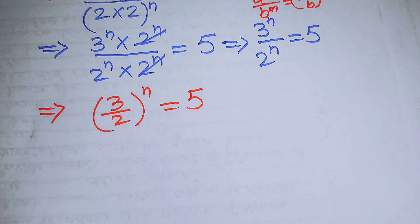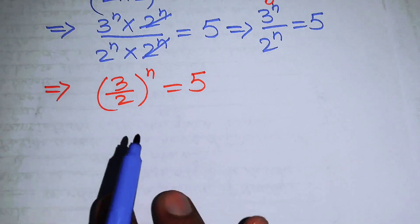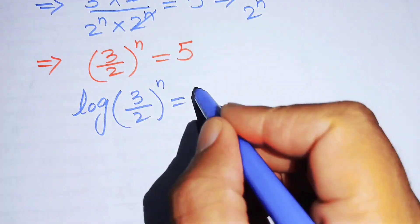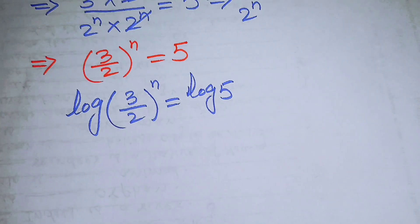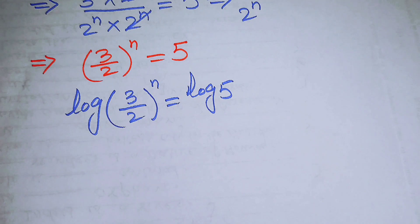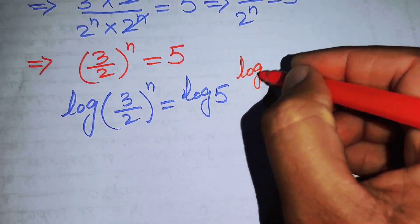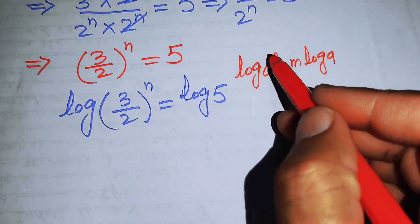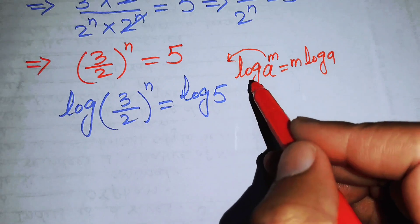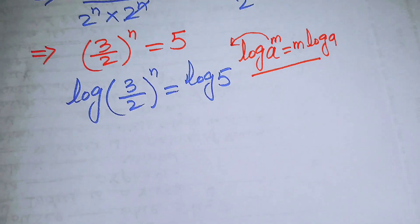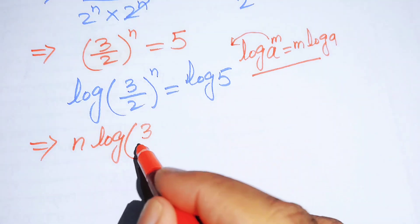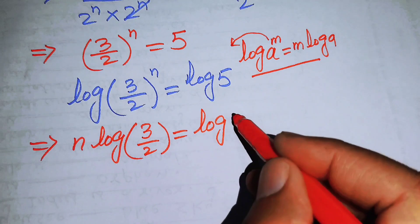Our goal is to find the value of n. To do that, we take the log on both sides, giving us log of (3/2)^n equals log of 5. We then apply the logarithm power rule: log(a^m) = m × log(a), moving the exponent to the front, so we get n × log(3/2) = log 5.